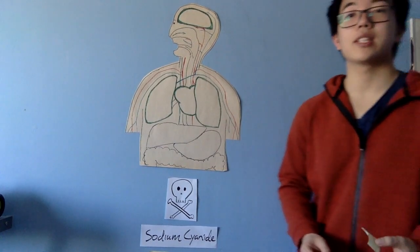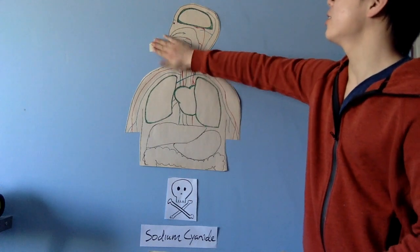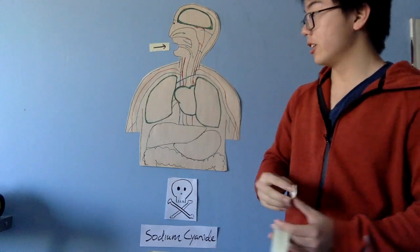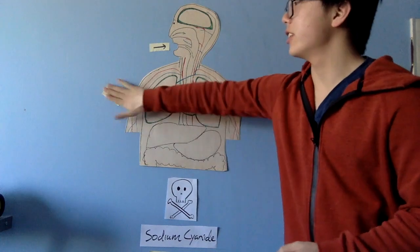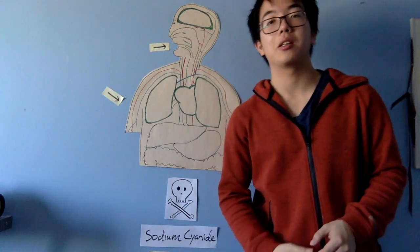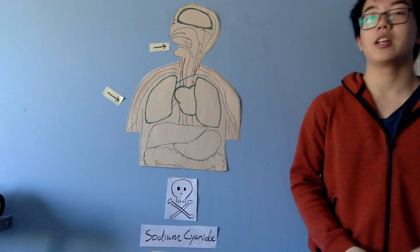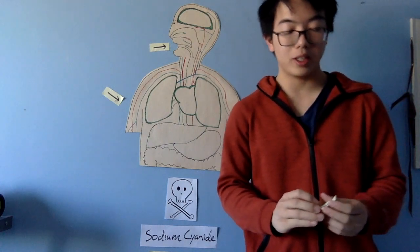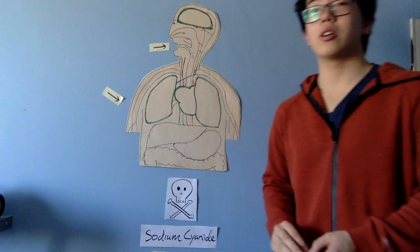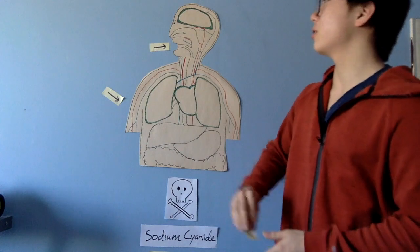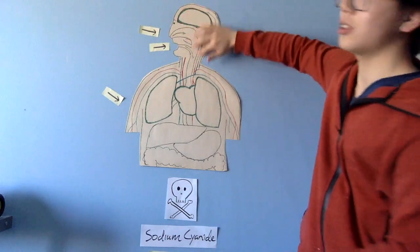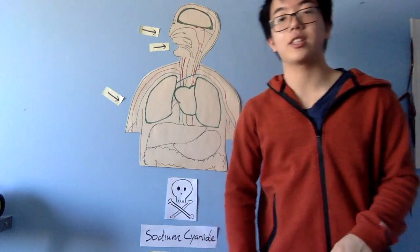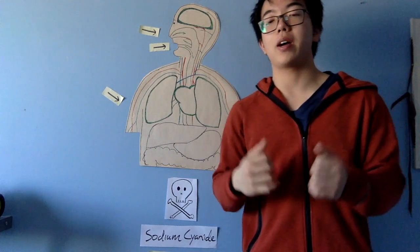There are three main ways for sodium cyanide to enter your body. One is through ingestion and skin contact. So if you ever decide to eat or touch sodium cyanide, it will be entered through your body. But the more often way is through inhalation through the nose because of the hydrogen cyanide gas it creates and also fine powders of sodium cyanide in the air.